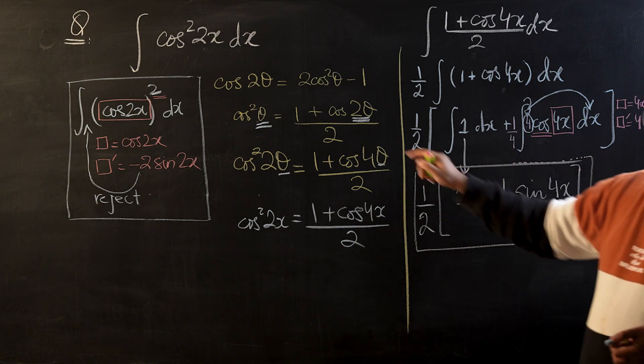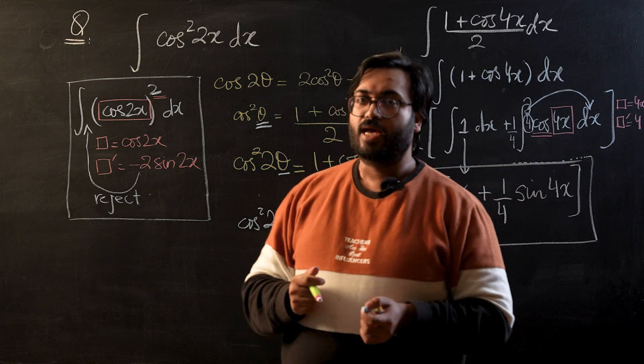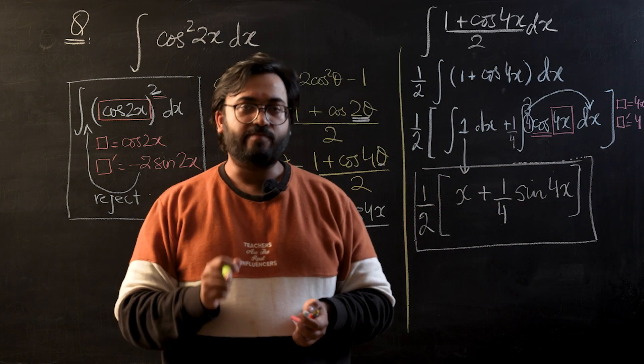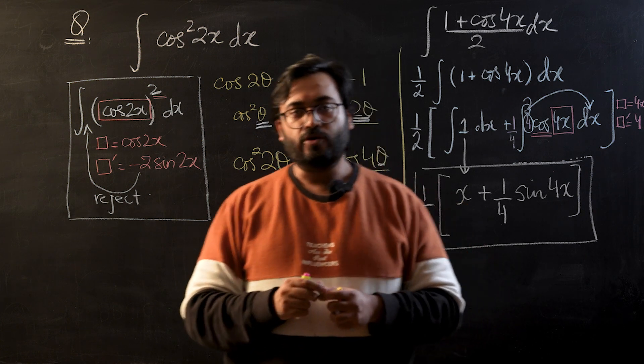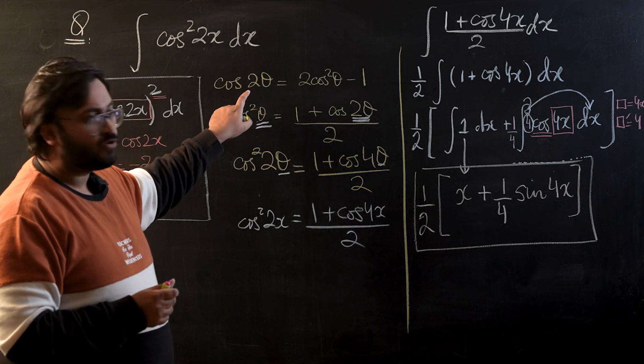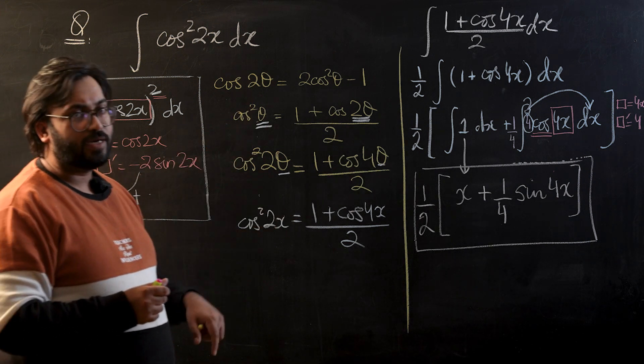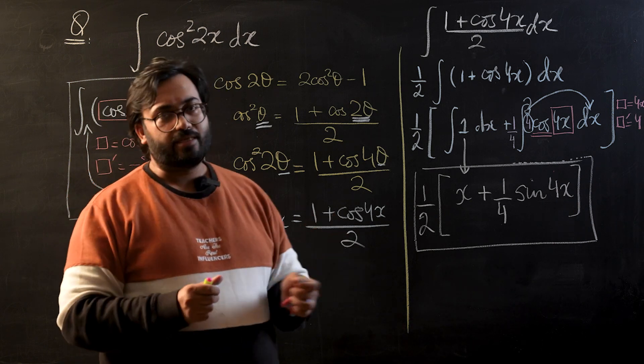This is the final integral for cos²(2x). The idea that I think you guys should remember is that whenever we are dealing with even powers of sin and cos, we always use double angle identities of cos(2θ). And from there, you can make cos² or sin² as subject and you can integrate these values.